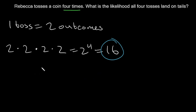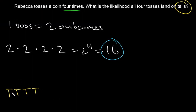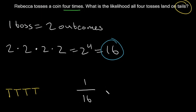But what is the outcome that we're looking for? Well, we're looking for all 4 tosses on tails — tails, tails, tails, tails. That outcome is only going to happen if all 4 tosses land on tails, so we're only looking for one possible outcome. So going back to our formula, the desired outcome is 1, and there are 16 possible outcomes. So the likelihood of all 4 tosses landing on tails is 1 over 16.